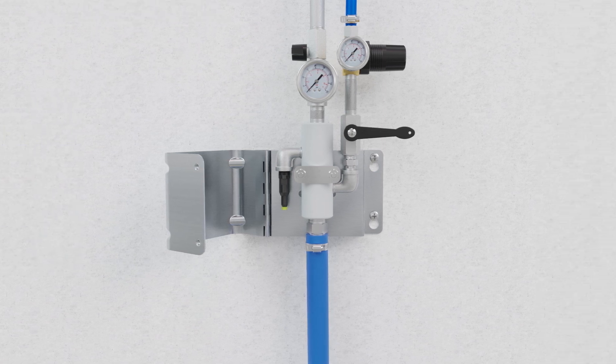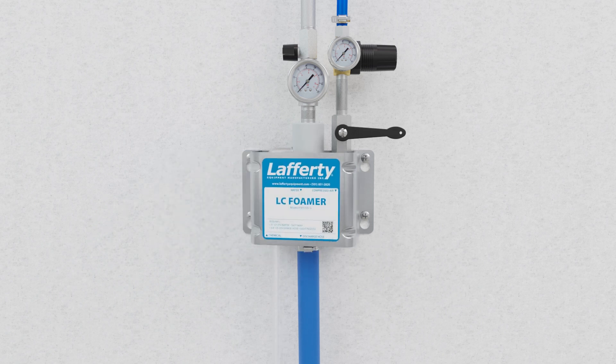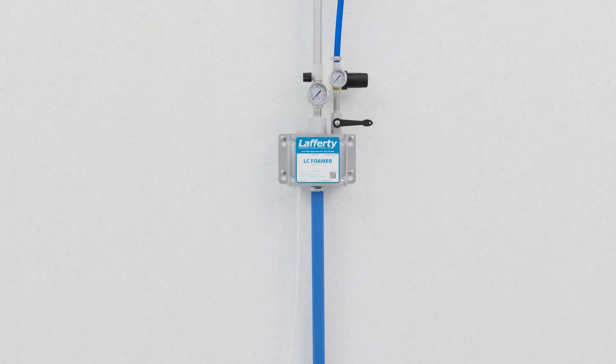With our dilution ratio set, we can now connect the suction tube to the check valve, close the cover, and prepare to operate the unit.